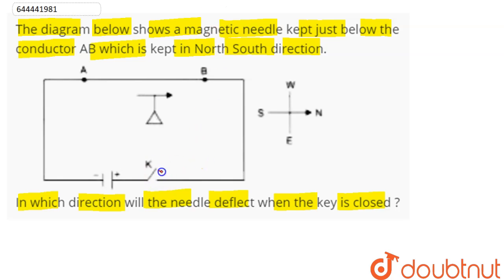So when the key is closed, we can see here from the battery positive terminal current flows in anticlockwise sense, that is from B to A. So by right hand thumb rule, we can say here the direction of the magnetic field...